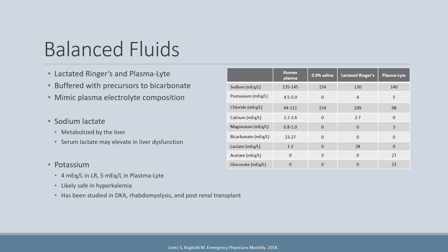There are two special considerations when using LR or Plasmalyte in ICU patients. First, the lactate in LR is sodium lactate, which is metabolized by the liver. You may see an increase in serum lactate in patients with liver dysfunction because they're not able to appropriately metabolize the sodium lactate they are receiving. Regarding potassium, there is some concern about giving LR to patients with high potassium levels, but the potassium content is relatively low — four milliequivalents per liter in LR and five milliequivalents per liter in Plasmalyte.